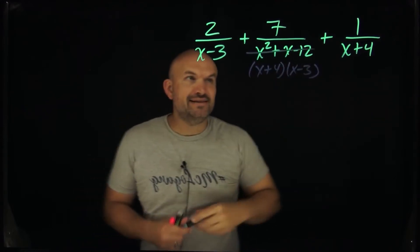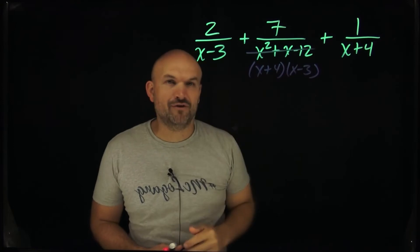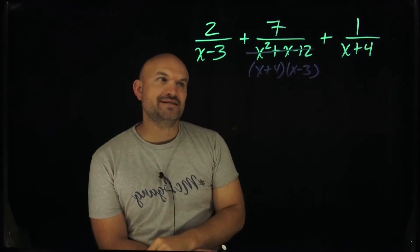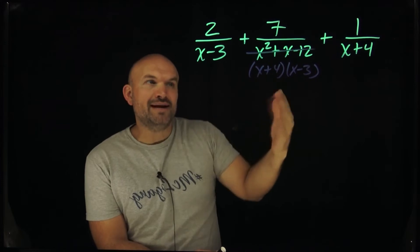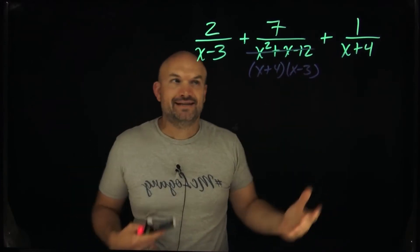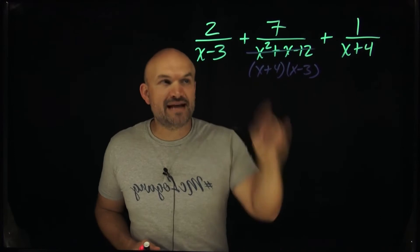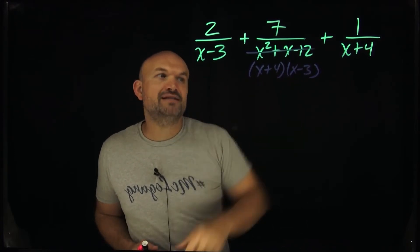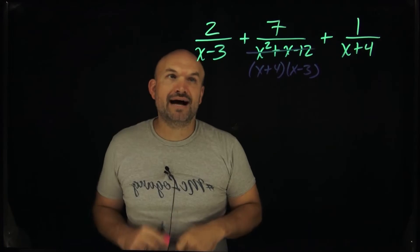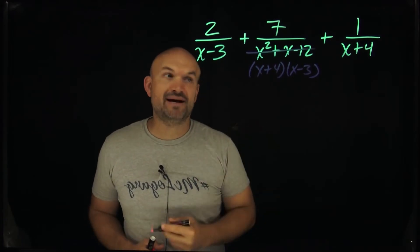Now I can write the middle denominator in factored form, and look how easy my life is. The common denominator of all three fractions already has an x plus 4 and an x minus 3 — I don't need to really create anything. I realize that my least common denominator is right here: it's just the product of (x + 4) times (x − 3). Over on the first fraction I only have an x minus 3, so I need to multiply by an x plus 4.